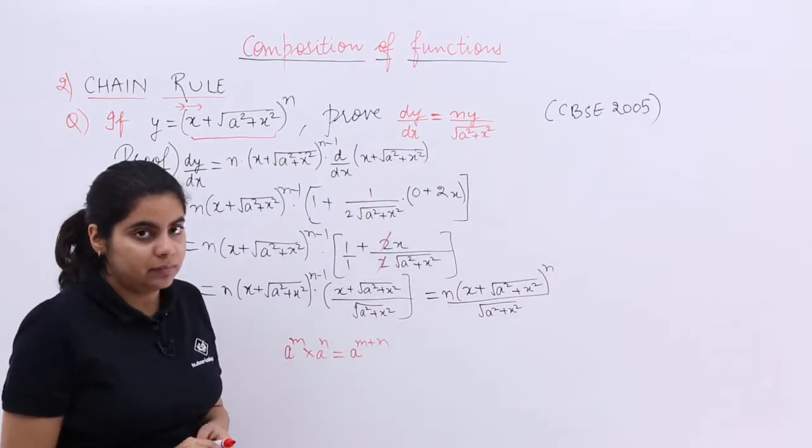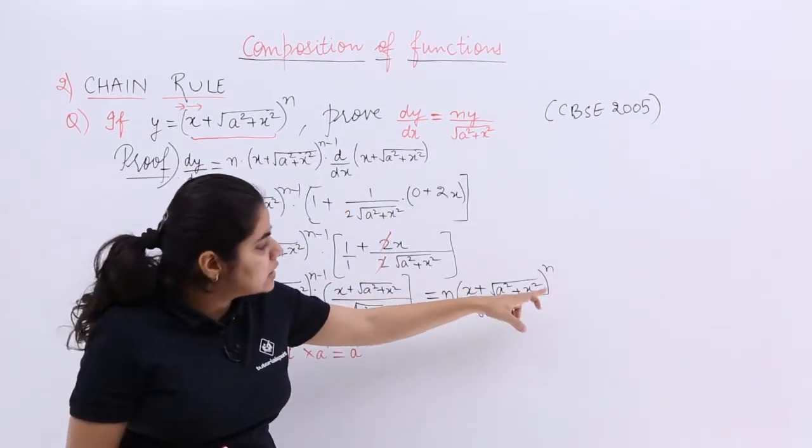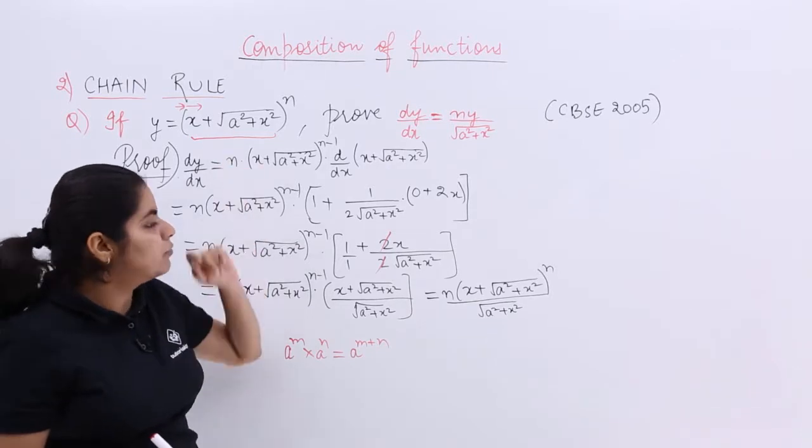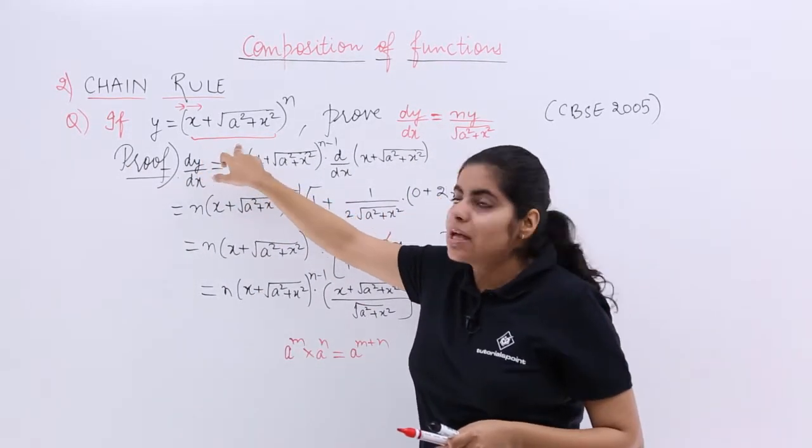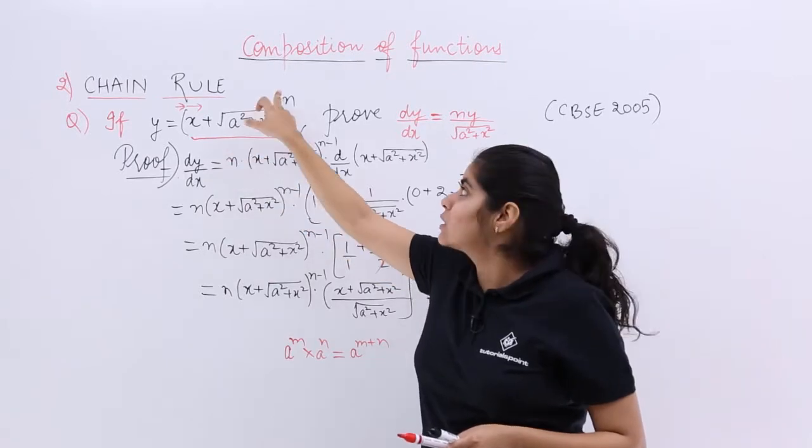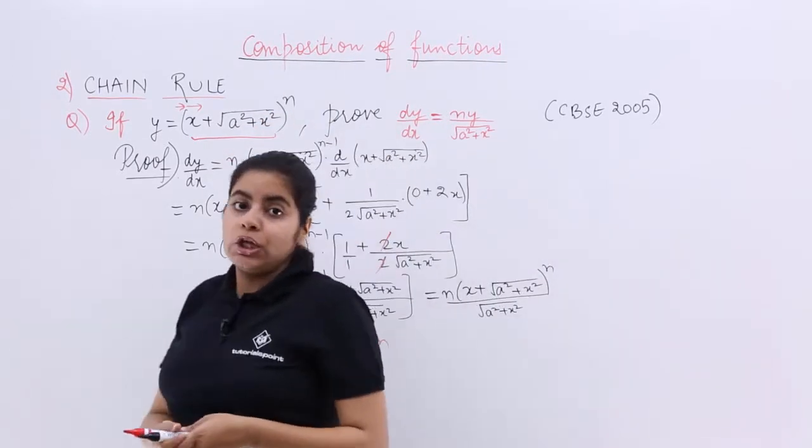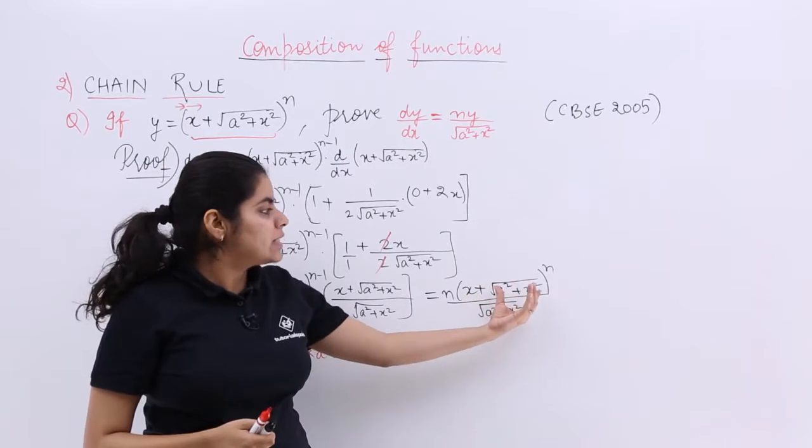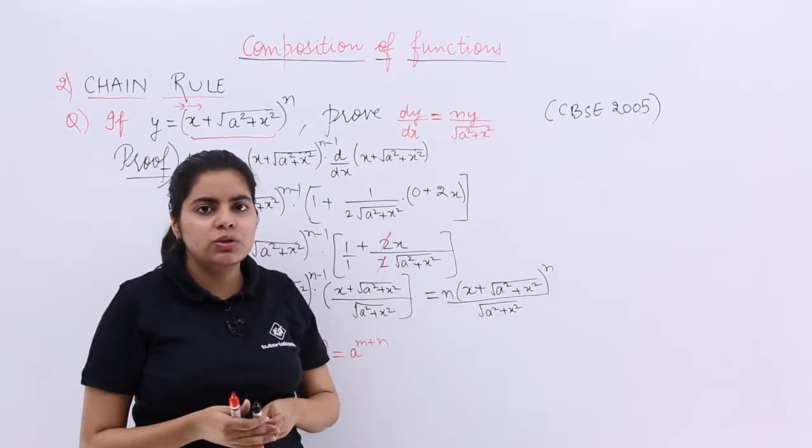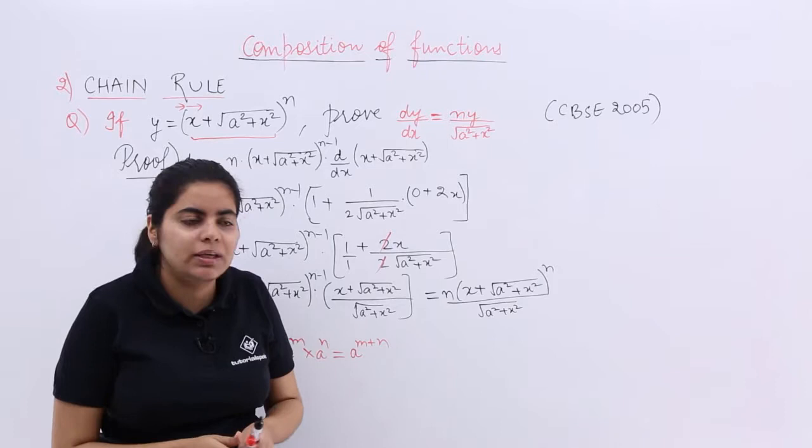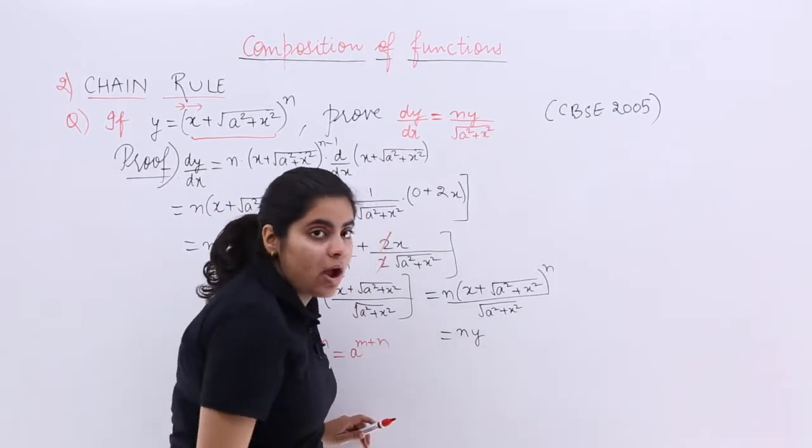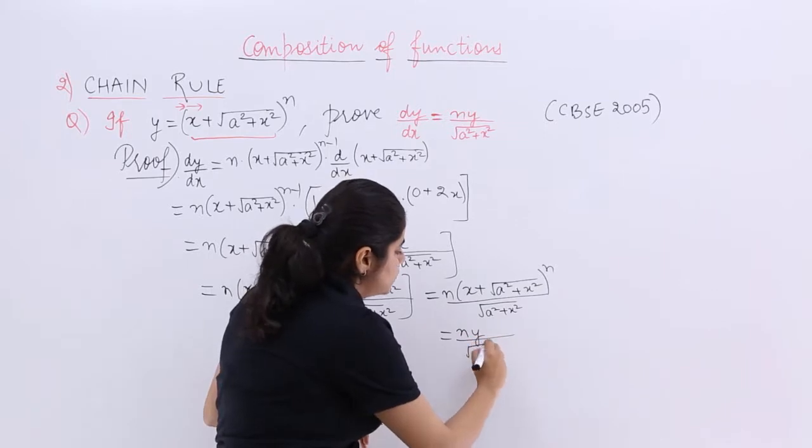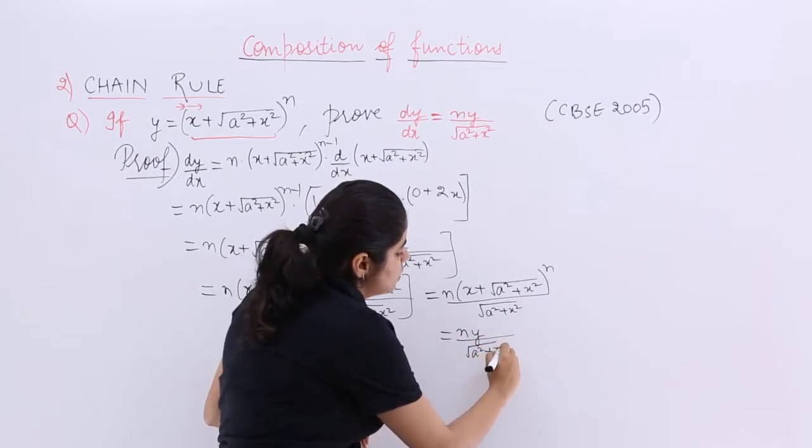Now see one thing. Do you find this familiar to something? What was y? y is here. Let us make it more clear. Here y was x plus under root a square plus x square raised to the power n. Here also you have x plus under root a square plus x square raised to the power n. So can you not substitute it equal to y? Yes you can. So it is what? n into y. And the rest cannot you substitute. So it is a square plus x square only.